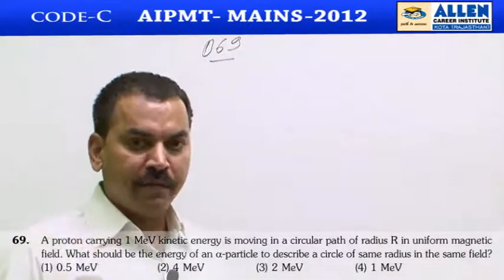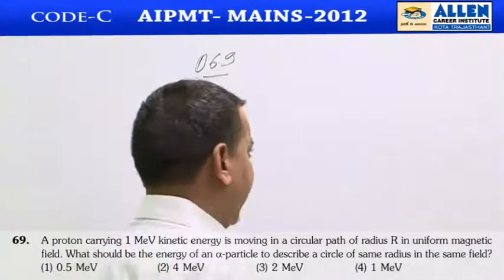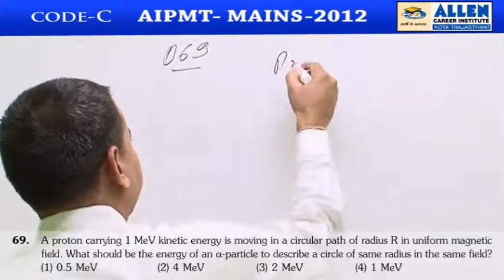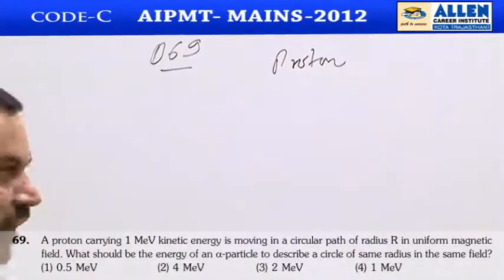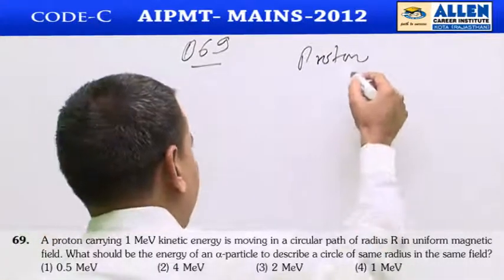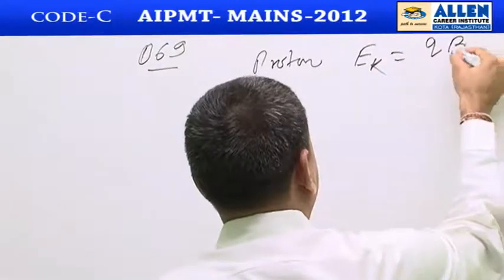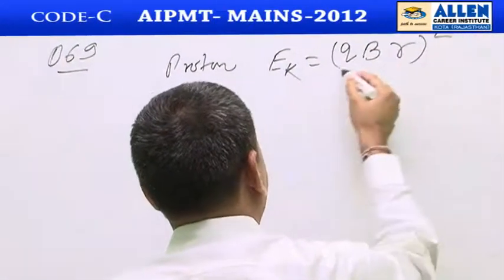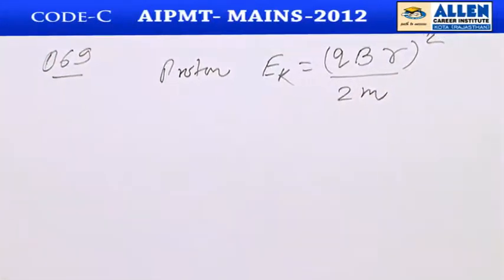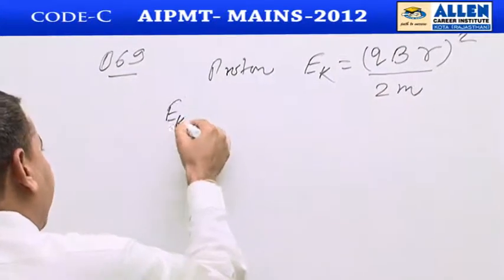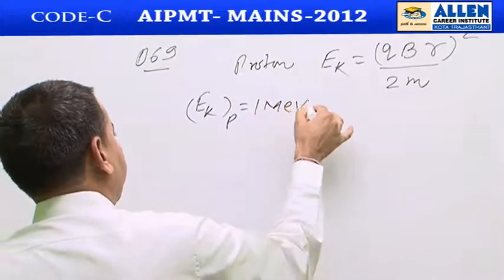Question number 69 is based on motion of a charged particle in a magnetic field. The kinetic energy of a charged particle in a magnetic field is given by KE = q²r²B² / 2m. A proton with kinetic energy of 1 mega electron volt is given.